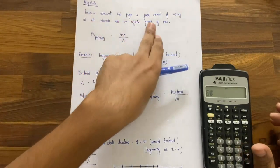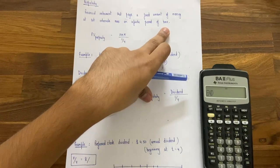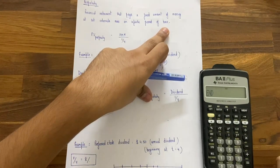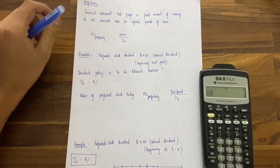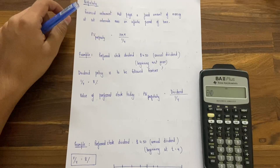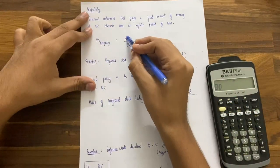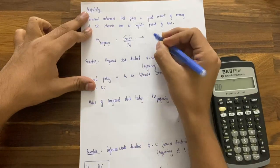There are financial instruments that pay a fixed amount of money at set intervals over an infinite period of time. So if we are giving some cash flows, there is going to be a price attached to that security. To calculate that, we simply have to have the PMT, that is the dividend amount which they are paying.